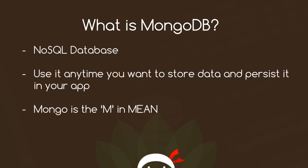What is MongoDB? It is a NoSQL database, and that basically means that instead of storing data in tables as we would with a SQL database like MySQL, we instead store it in documents or collections of objects much like JavaScript notation. Now if we think about this for a minute, that makes sense if we're using Node.js on the server, because it's easier to communicate with a NoSQL database when we're using JavaScript objects. So it's really good when we're using JavaScript, and we can use it anytime we want to store data and persist it in our application, for example a web app.